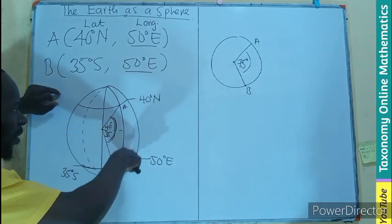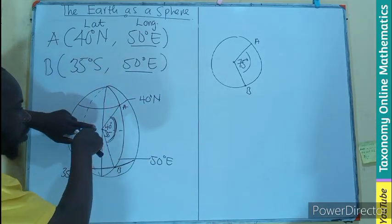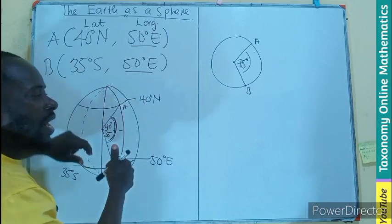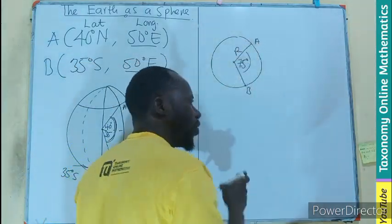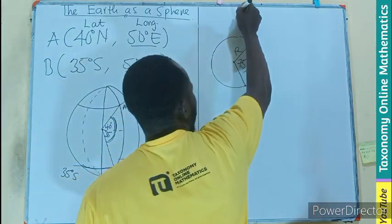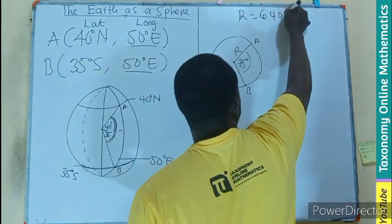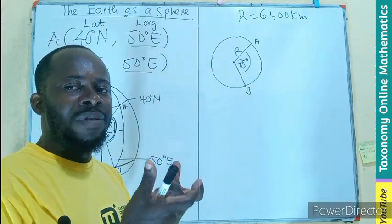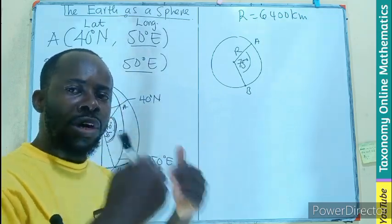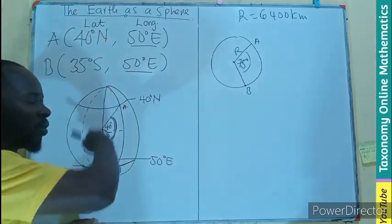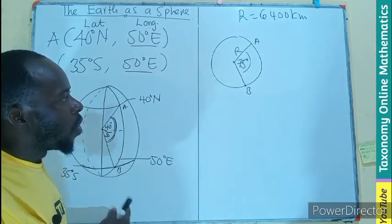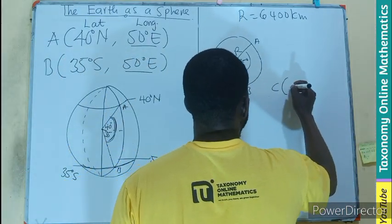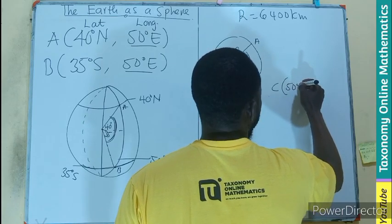This is a great circle. What makes it a great circle is that the center of the circle we are forming — along the 50-degree longitude — is also the center of the Earth. So any line from the Earth's circumference to the center gives us a radius equal to the radius of the Earth itself, which is approximately 6,400 kilometers. Unlike the small circle, where the radius must be calculated differently for each position on the globe.